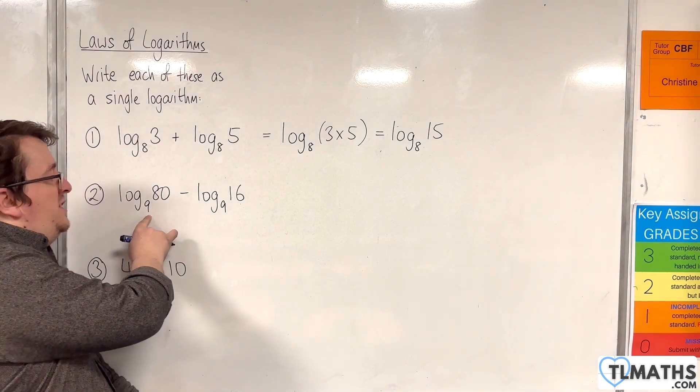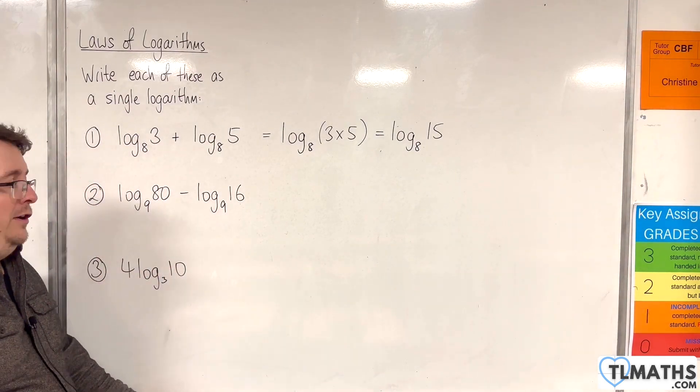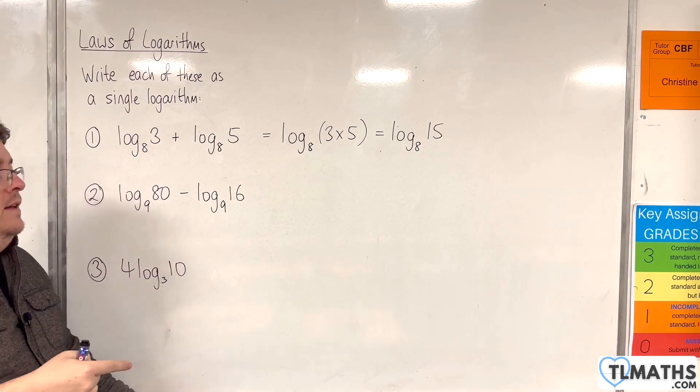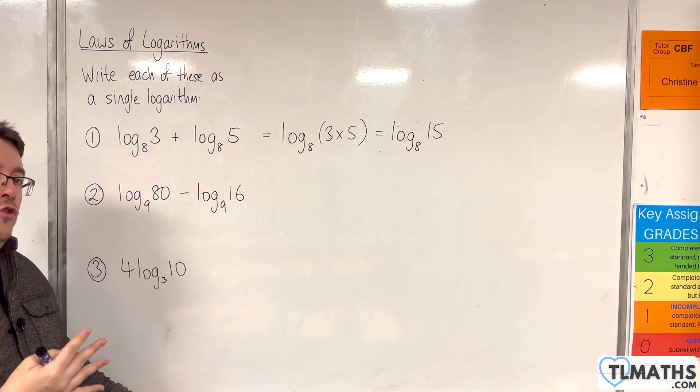The second one, we have base numbers 9 and 9, which means I can use a log law. And because of the subtraction this time, that means we're going to use the quotient rule.